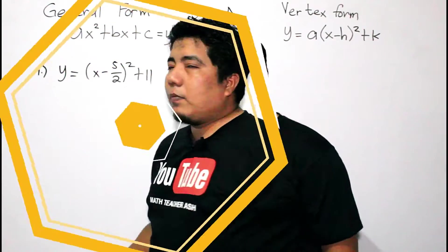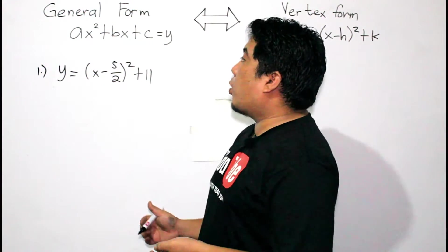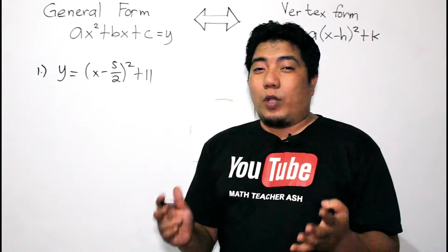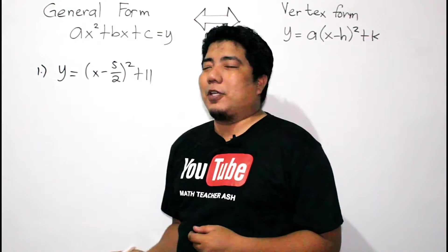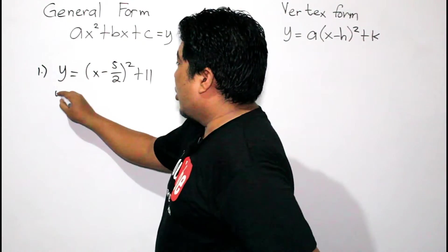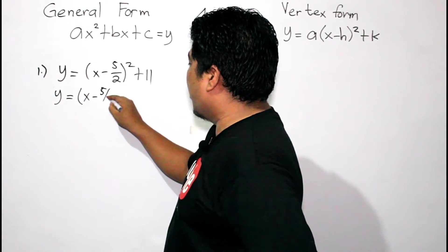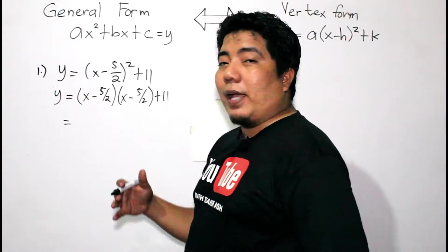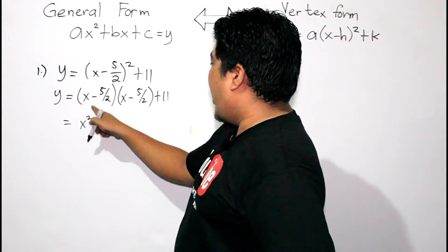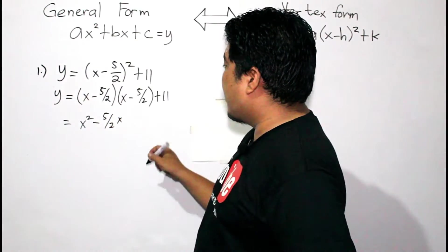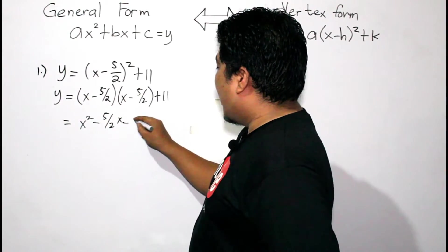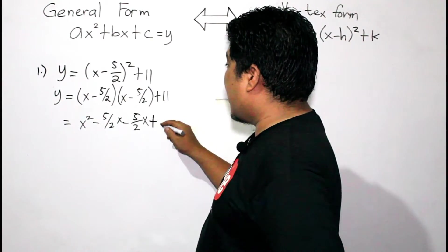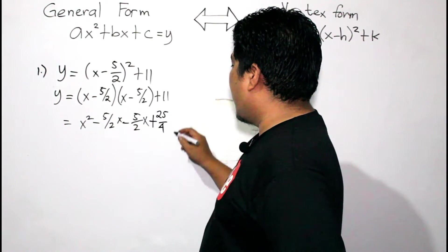Now let us consider another example. We have Y equals the quantity X minus 5 over 2 squared plus 11. The question is: how do you transform this into standard form? First, expand: Y equals (X minus 5 halves) times (X minus 5 halves) plus 11. Applying the FOIL method: X times X is X squared, X times negative 5 over 2 is negative 5 over 2 X, and negative 5 over 2 times X is also negative 5 over 2 X. Then negative 5 over 2 times negative 5 over 2 is positive 25 over 4, plus 11.